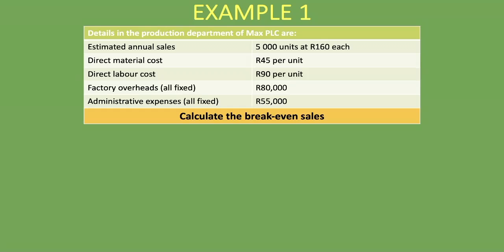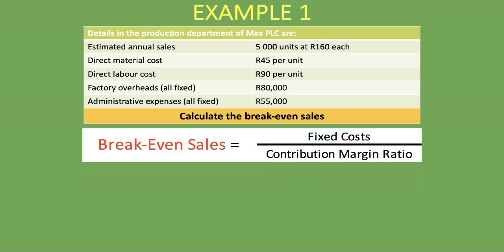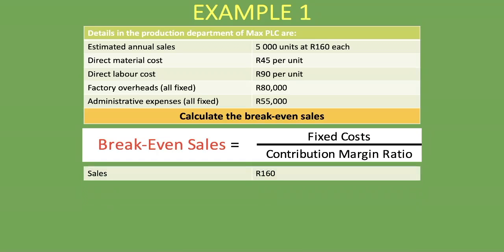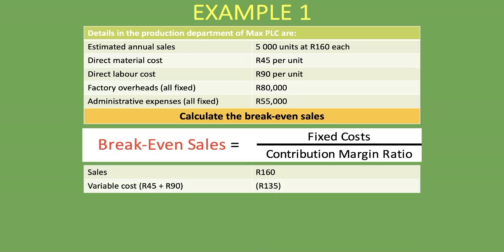Let's calculate the break-even sales. The fixed costs are R80,000 plus R55,000. For the contribution margin ratio, we first need to calculate contribution, which is sales minus variable cost. Our selling price per unit is R160, and the variable cost is the direct material cost plus direct labor cost of R90, giving us a variable cost of R135 per unit. Sales minus variable cost gives us a contribution of R25 per unit.